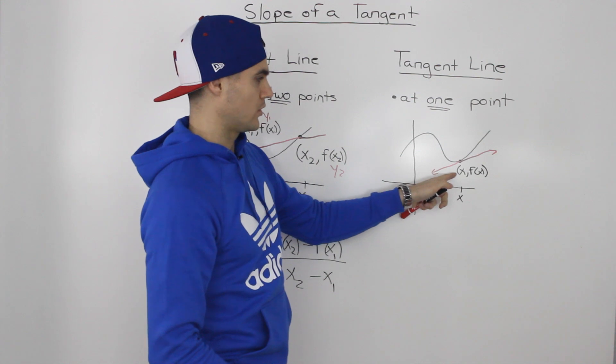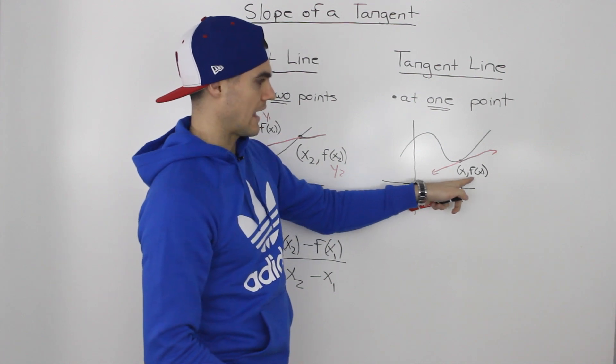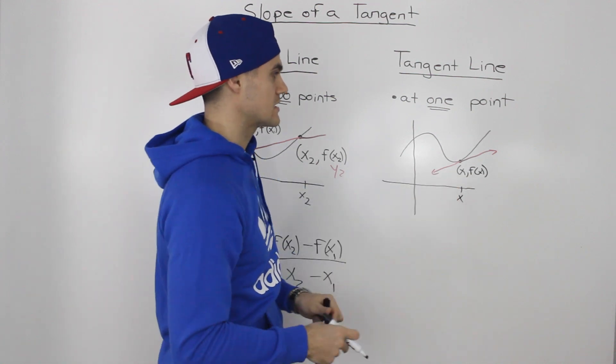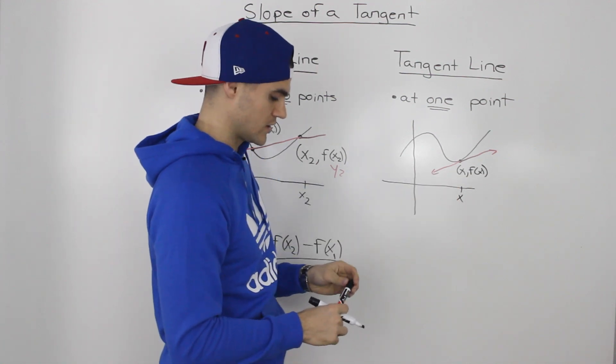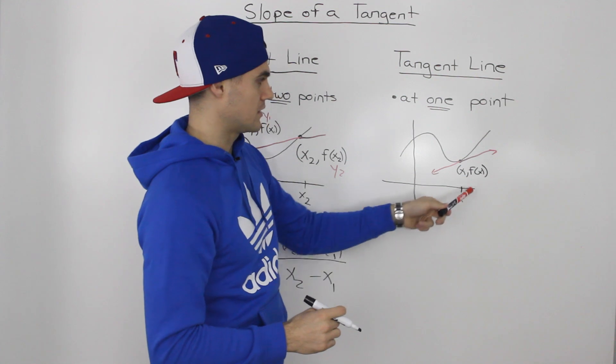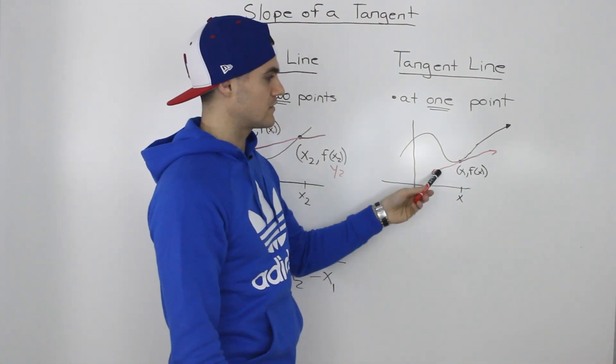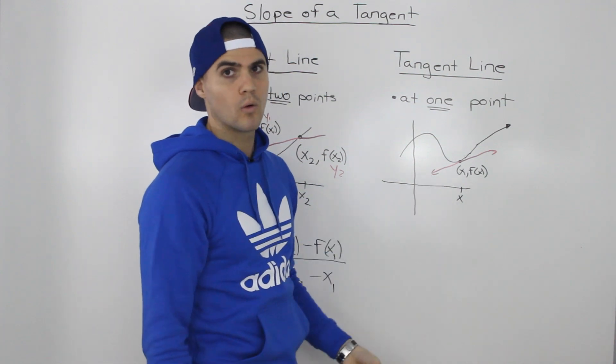So the coordinate of that point is going to be x, and then the y value is going to be f of x, whatever f of x is equal to. We don't have the actual equation in this example, but that's what the notation for the y value would be. Now the question is, how do we find the slope of the tangent when we only have one point?